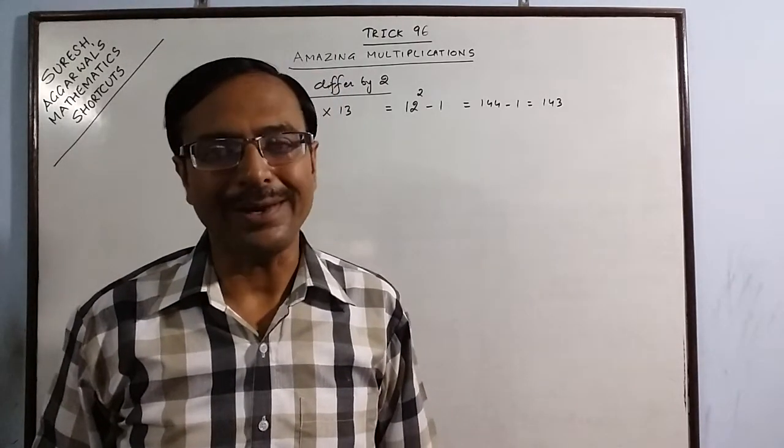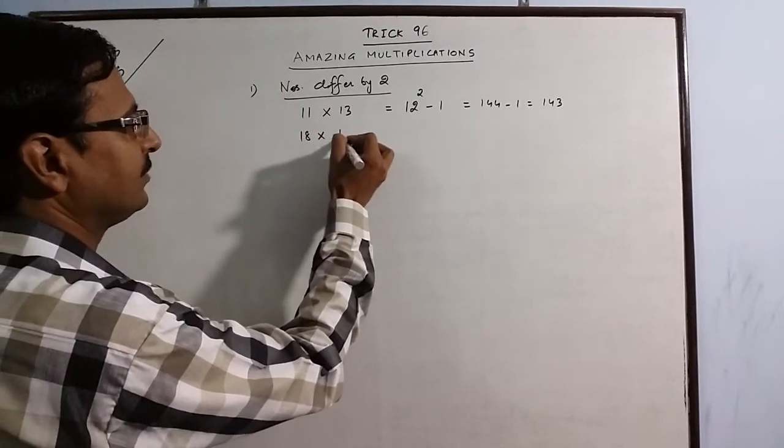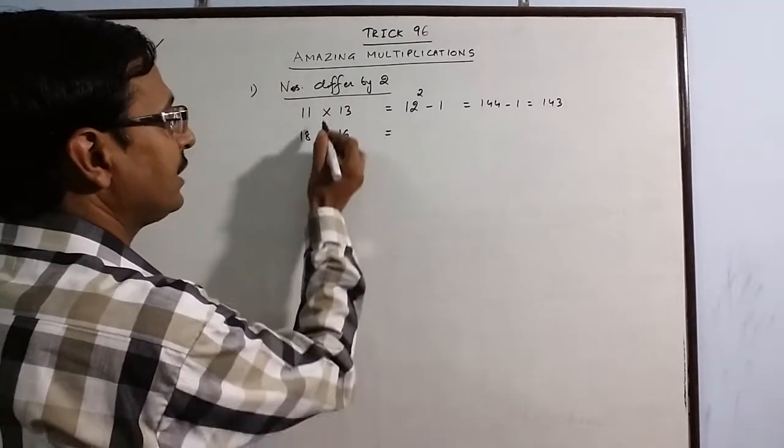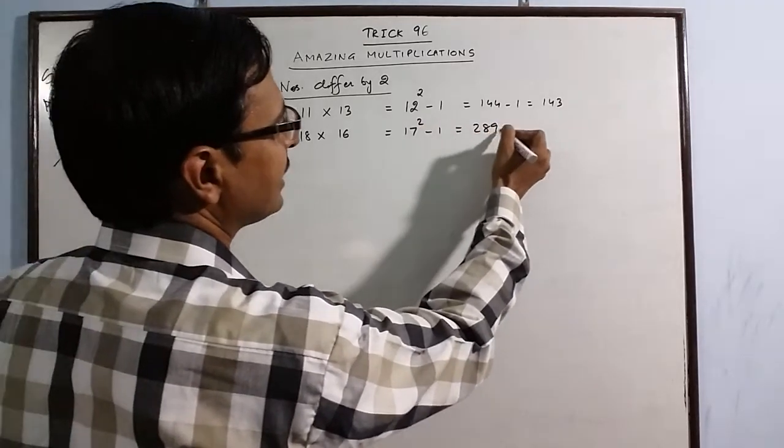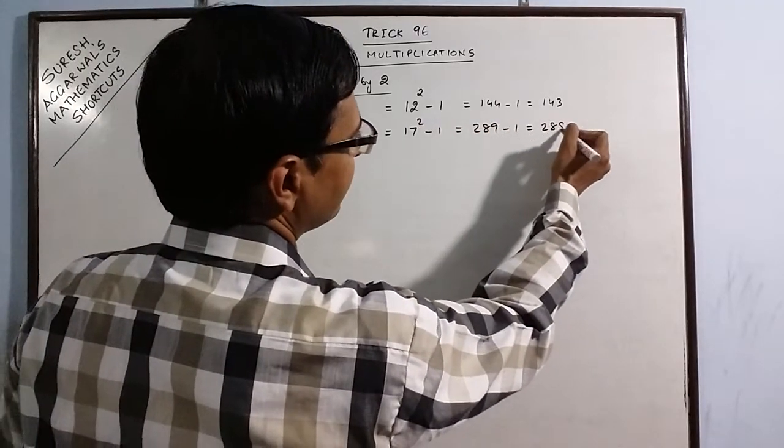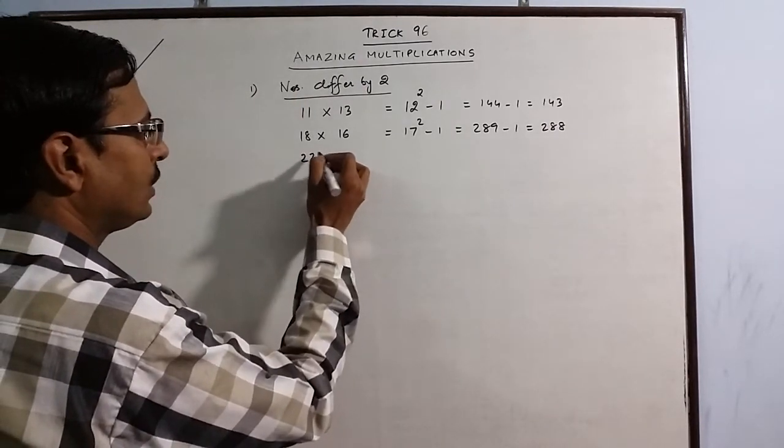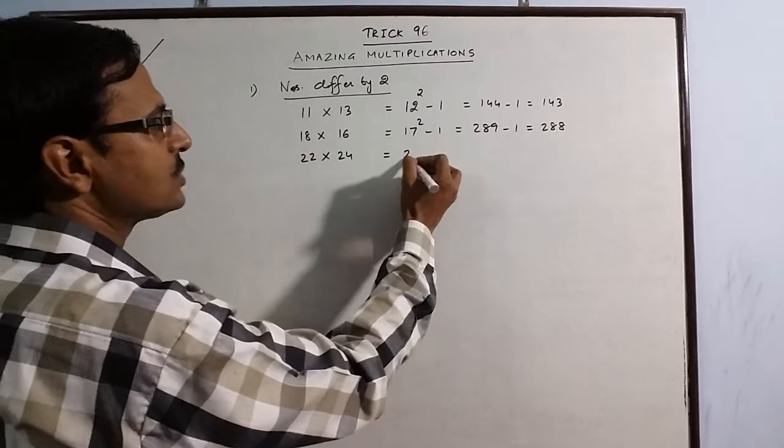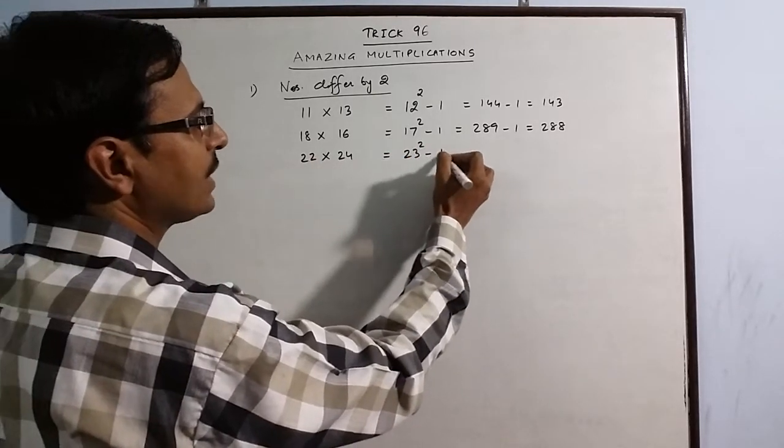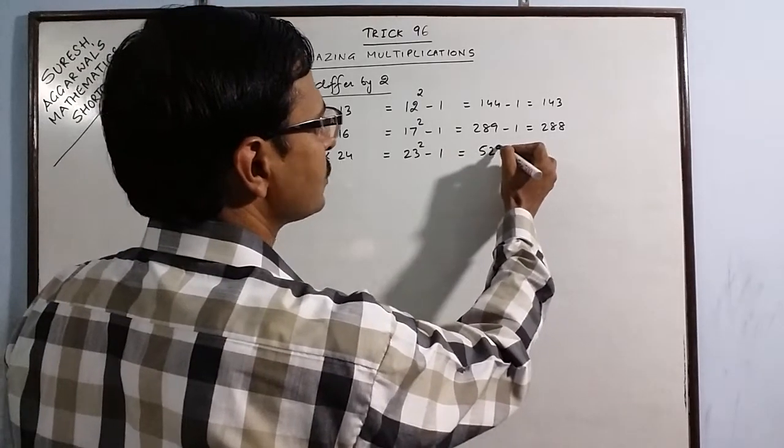Say we have one more example: 18 into 16. The intermediate number is 17, so 17 square minus 1: 289 minus 1, 288 is the answer. Say we have some more numbers: 22 into 24, the intermediate number is 23. So 23 square minus 1: 529 minus 1, so your answer is 528.